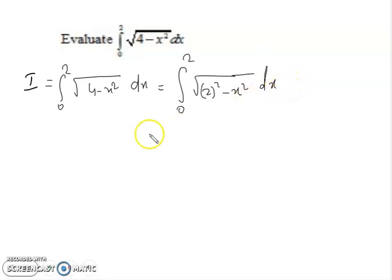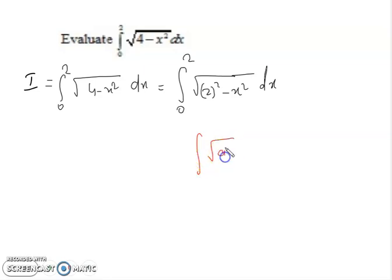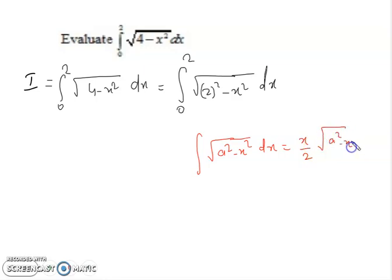We know a very important formula that we can apply here: ∫√(a² - x²) dx = (x/2)√(a² - x²) + (a²/2) sin⁻¹(x/a).